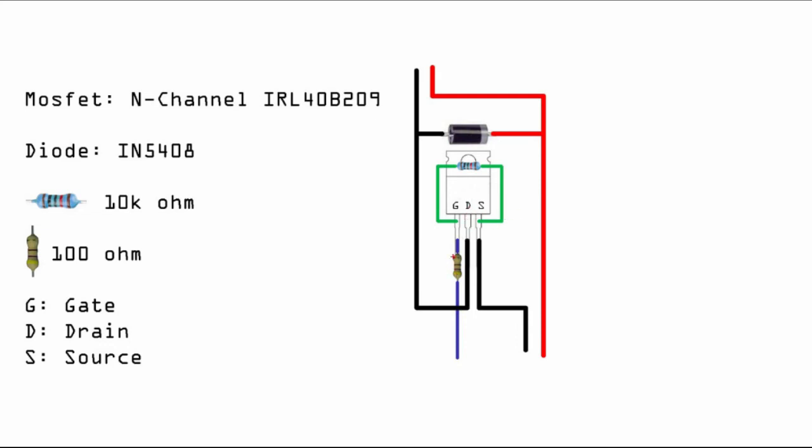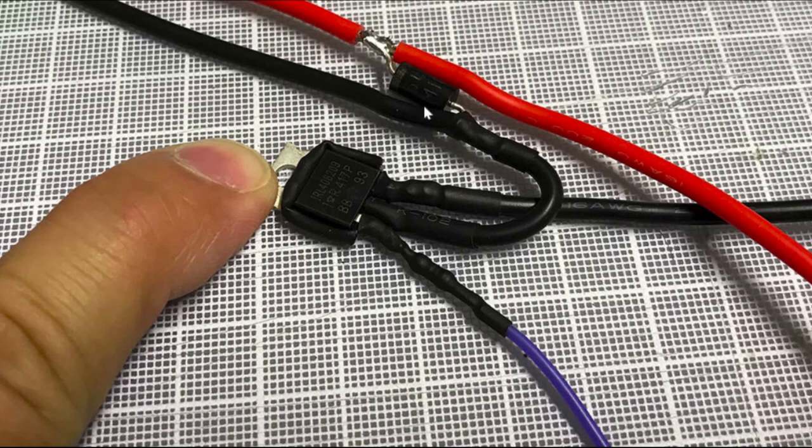So basically the MOSFET, you can think about it: if there's no voltage applied to the gate, this connection does not exist so the current cannot flow. Once you have enough voltage applied to the gate, then they will allow the drain and the source to sort of open up a channel. Now you have a complete circuit where current can flow.